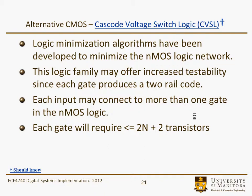Logic minimization algorithms have certainly been developed to minimize the size of the NMOS logic network. It's not very large in any event, so certainly you can make it optimal. This logic family may offer increased testability because it has a two-rail code, so you can always verify you're not stuck since you'll get complementary signals on all your lines. Each input may connect to more than one gate in the NMOS logic — that's a consequence of synthesis and reducing transistor count. Each gate would typically require less than 2N plus 2 transistors.